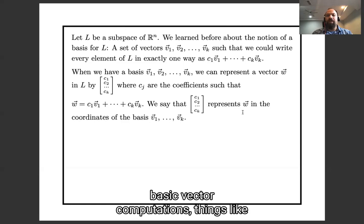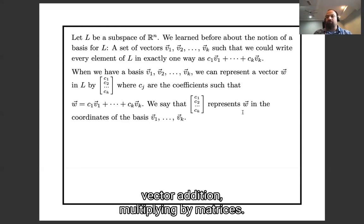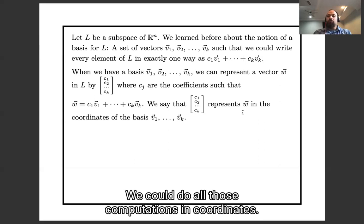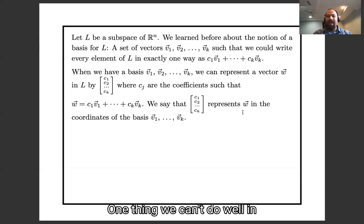And we saw that sort of basic vector computations, things like vector addition, multiplying by matrices, we could do all those computations in coordinates. One thing we can't do well in coordinates is take dot products.